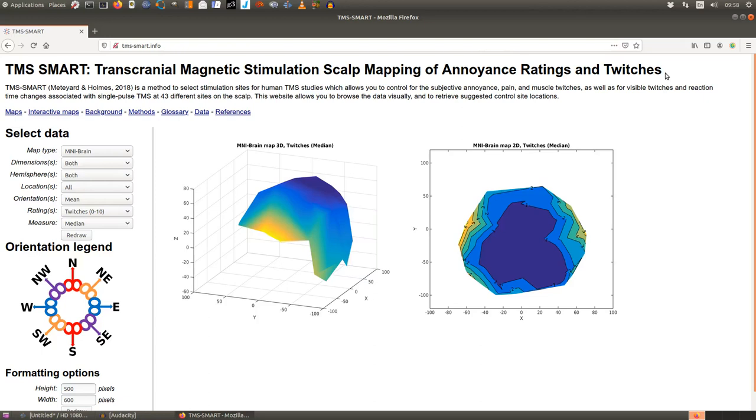In the experiment we gave 20 people TMS at 43 different locations and then after each location we asked subjects to say how annoying that was, how painful it was, how much they twitched.